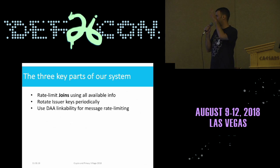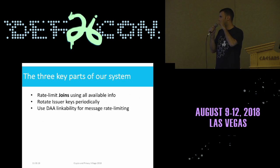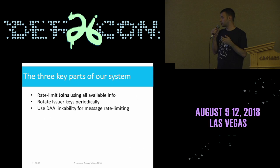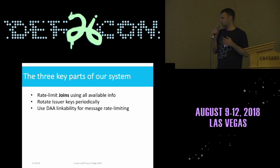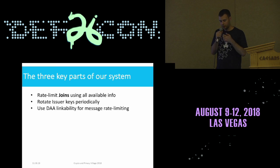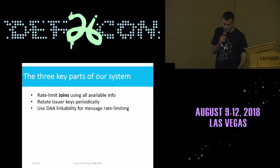As a summary of the key parts of our system: first, we rate limit joins using all available information we have — user IP, email if available, etc. Then we rotate issuer keys periodically. And last, we use the direct anonymous attestation linkability for doing the actual rate limiting on the messages.